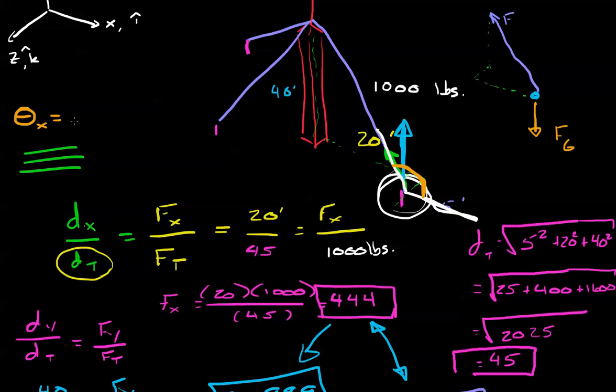And the way we do that is we simply take the inverse cosine of the horizontal component, which is f of x, and f of x is 444, and we divide it by the total of a thousand pounds. You could also, if you wanted to, you could also do it with distance, because remember, they're the same angle, they're the same amount, and we know that the horizontal component is 20, and the total component is, what did we say? The total distance was 45.